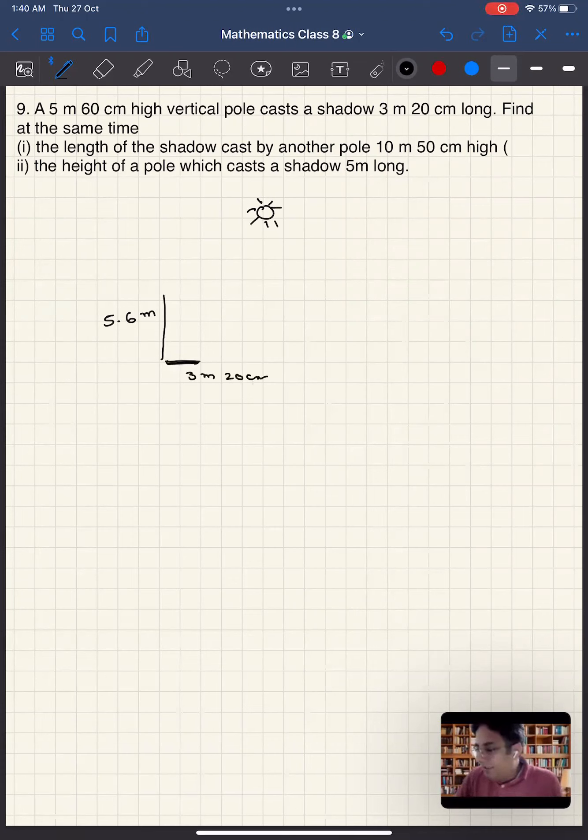At the same time, the length of the shadow cast by another pole - if there is another pole which is almost twice the size, which is 10.5 meters or 10 meters 50 centimeters - what would be the length of the shadow?